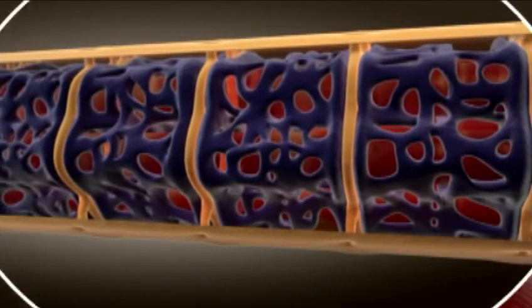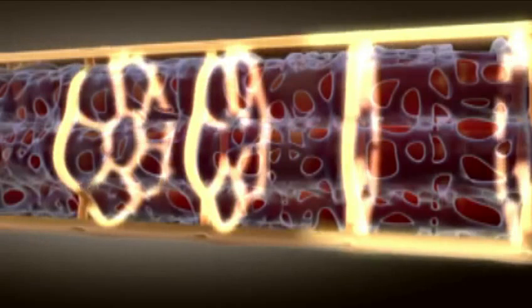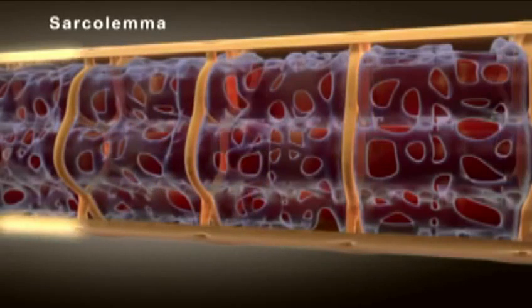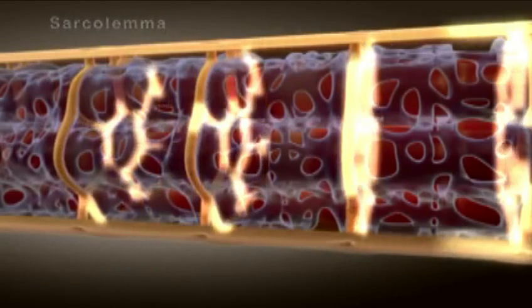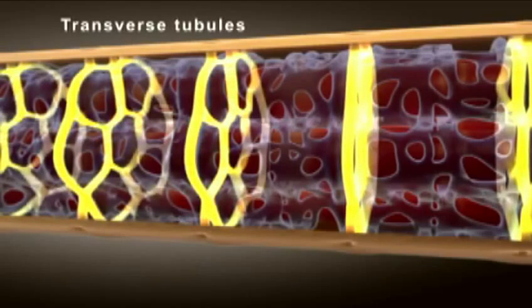If we look at a single muscle fiber, we see that an action potential travels across the entire sarcolemma and is rapidly conducted into the interior of the muscle fiber by structures called transverse tubules.